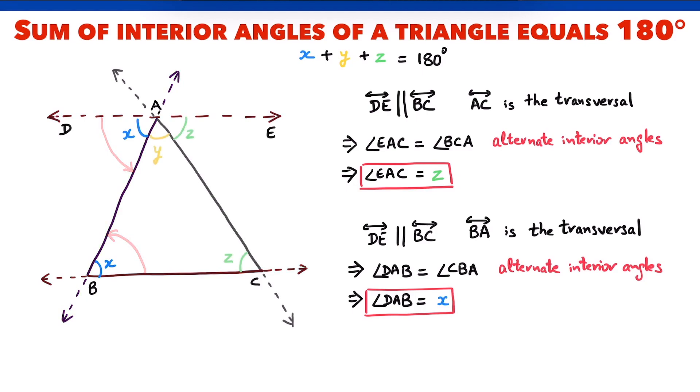What do we have now? DAE is a straight line, so this has to be a straight angle, 180 degrees. Clearly, X plus Y plus Z equals 180 degrees. Sum of interior angles of a triangle is indeed 180 degrees.